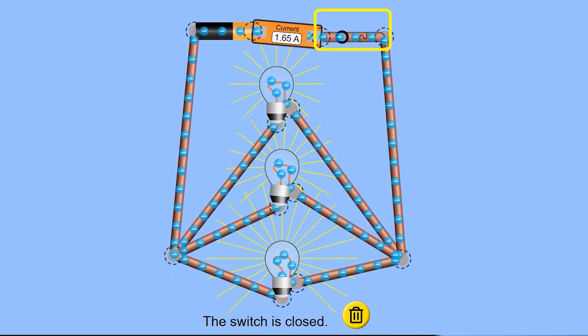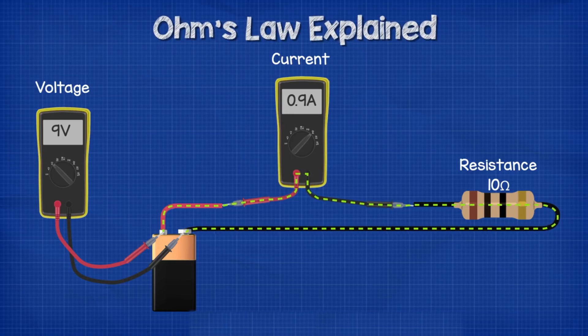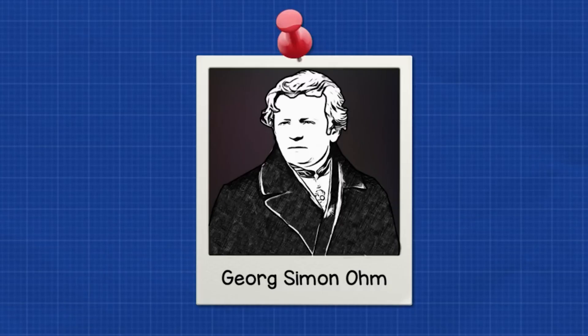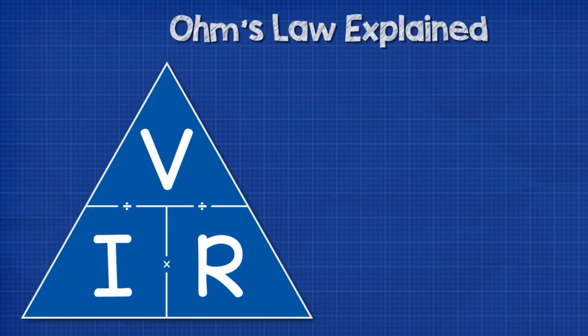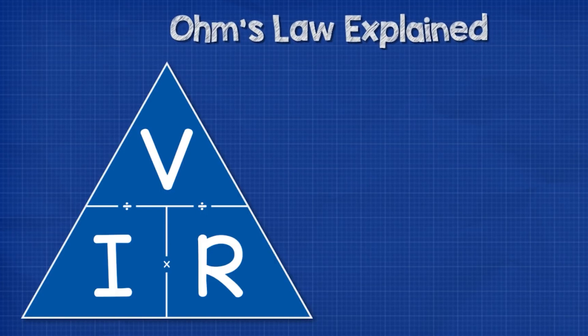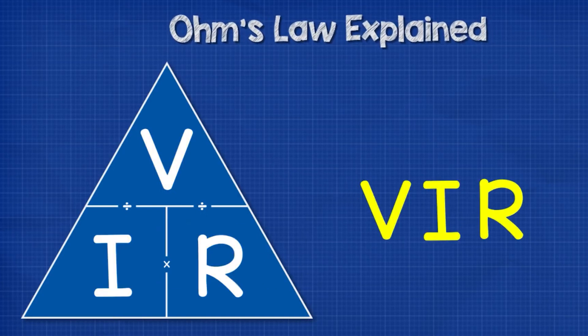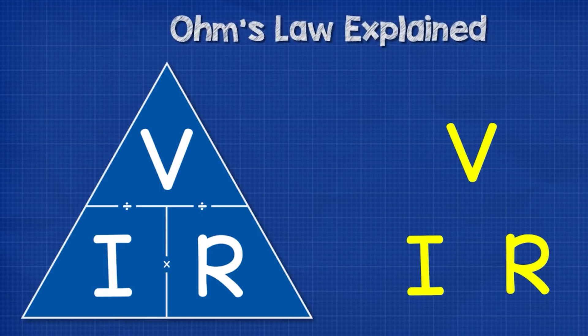In conclusion, through these series and parallel circuit configurations, we've demonstrated how each light bulb in the simulations obeys Ohm's law. The voltage drop across each bulb can be calculated using the current and the respective resistances, which follows the delta V equals IR formula.